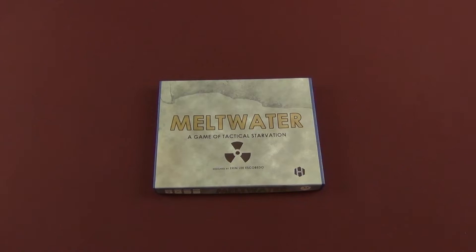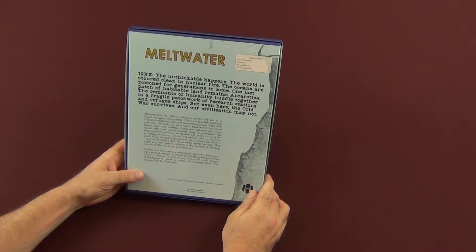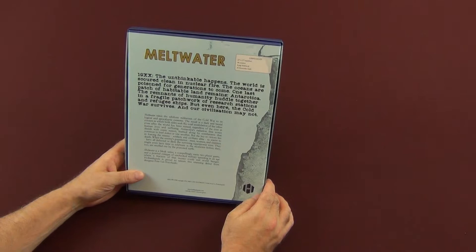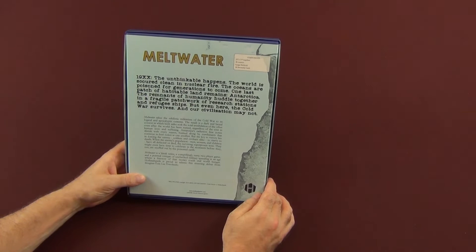It is designed by Aaron Lee Escobedo, who is a first-time designer. Let's take a look at the back of the box. You get a 22 by 17 map sheet, 88 counters, 8 page rulebook, and 28 doomsday cards.